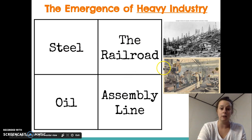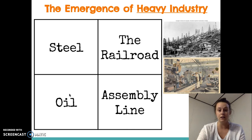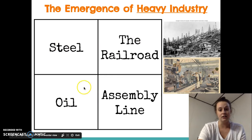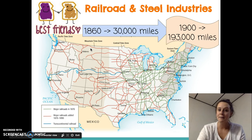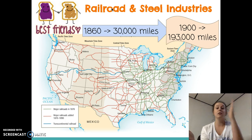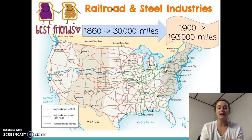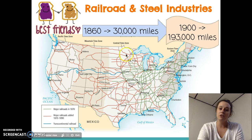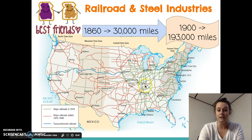The assembly line really enables heavy industry to take off, but we're going to focus on steel and railroad specifically. Oil emerges as a result of steel and railroad industries becoming so successful because you need oil in both of those industries. These are the three major industries of the time period: steel, railroad, and oil. The railroad needs steel and the steel needs the railroad — a steel company won't be successful without contracts to help build rails, rail cars, and products, so you see these industries working very closely together.